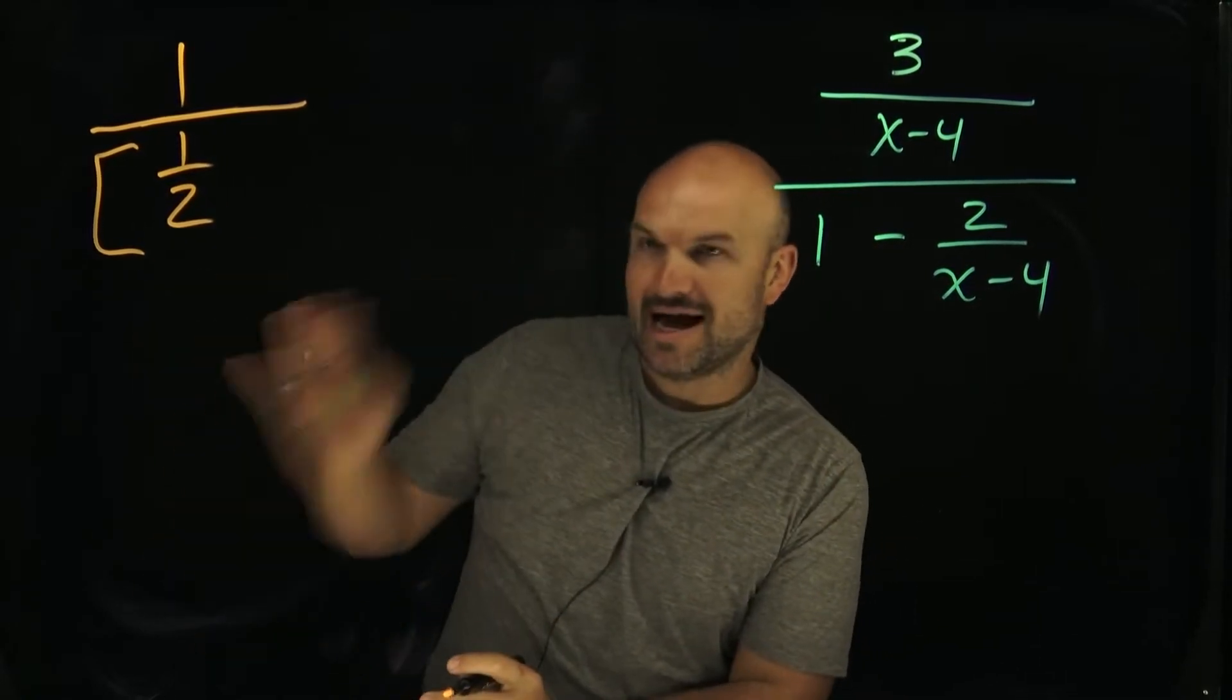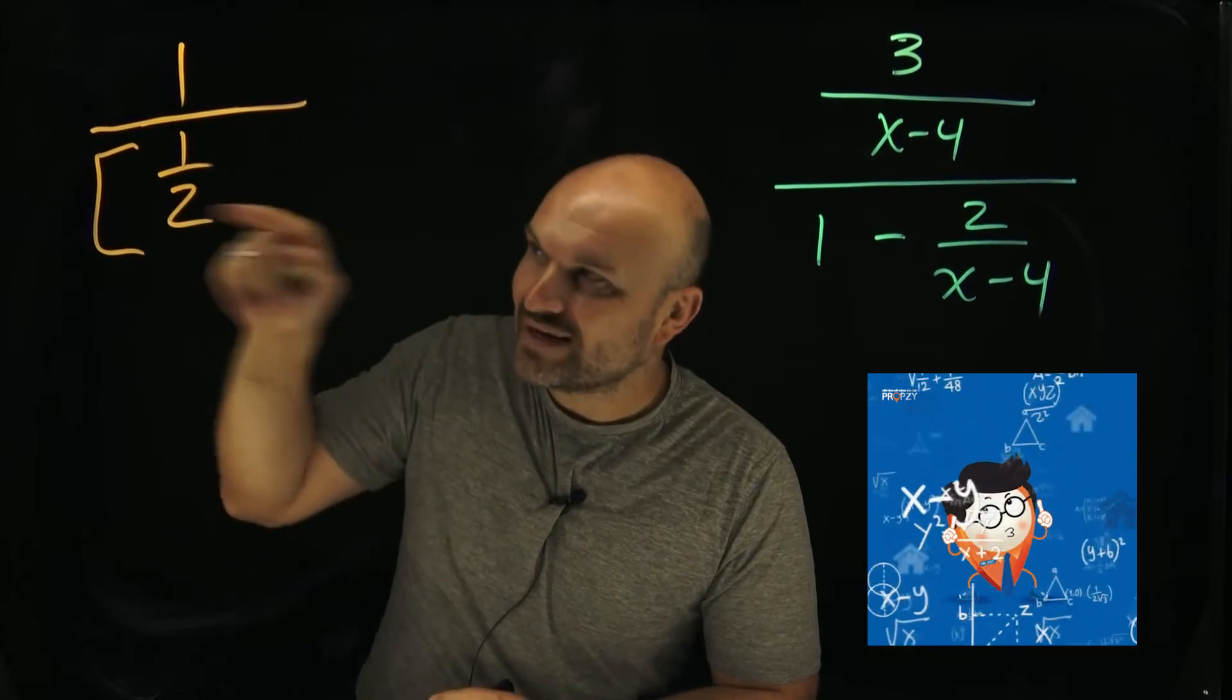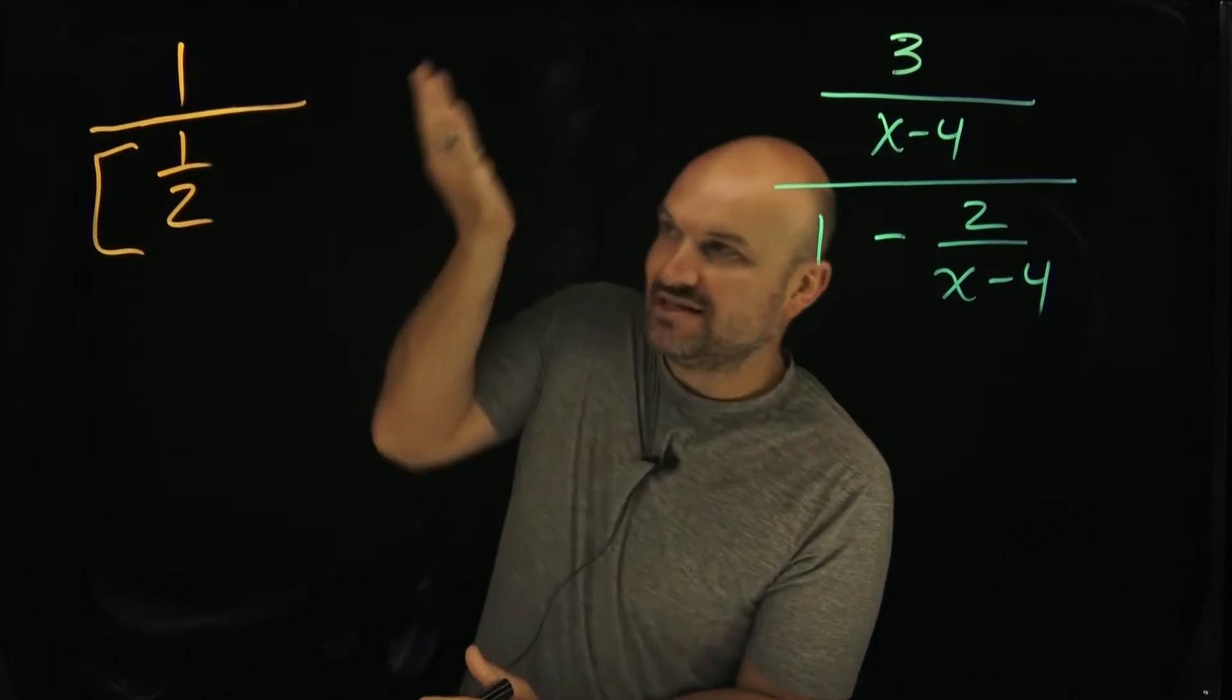So if we want to get rid of a fraction, how do you do that? A fraction has a numerator and a denominator. How do you get rid of that denominator? Well, what you need to do is you need to find a number that your denominator is going to evenly divide into.